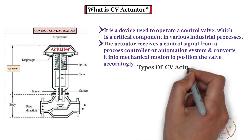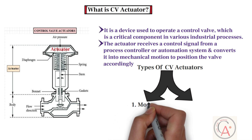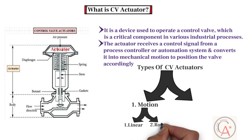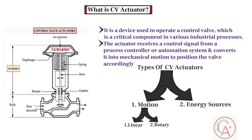Control valve actuators can be broadly categorized into two main types. The first category is based on motion, which includes two types: linear actuators and rotary actuators. The second category is based on energy source, which includes four types: pneumatic, electric, hydraulic, and electro-hydraulic actuators.